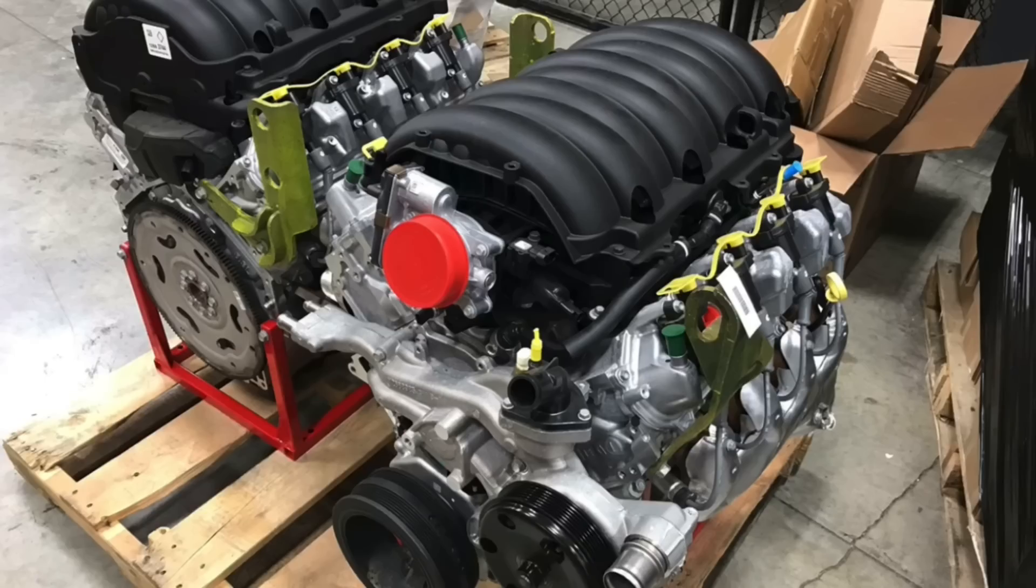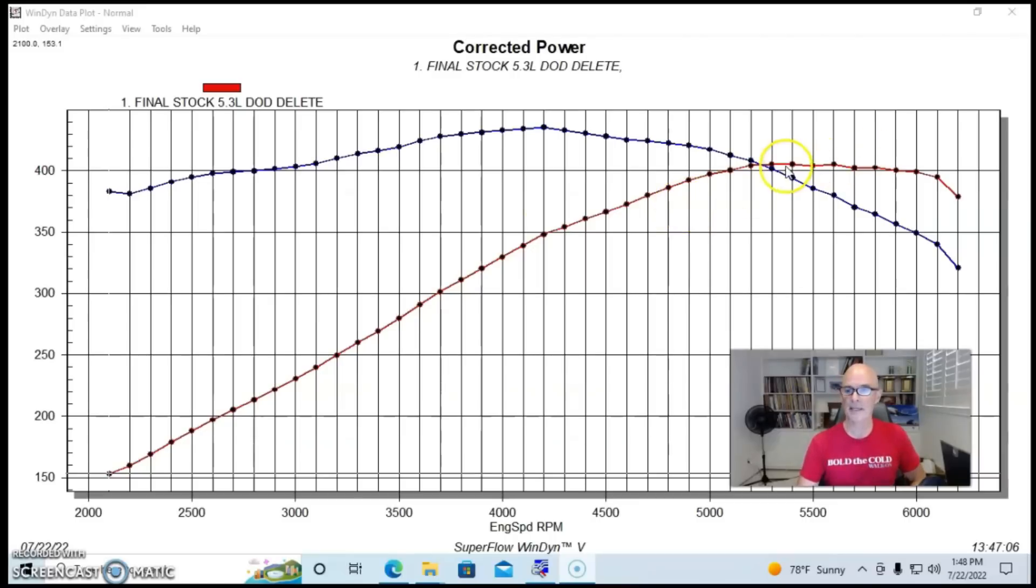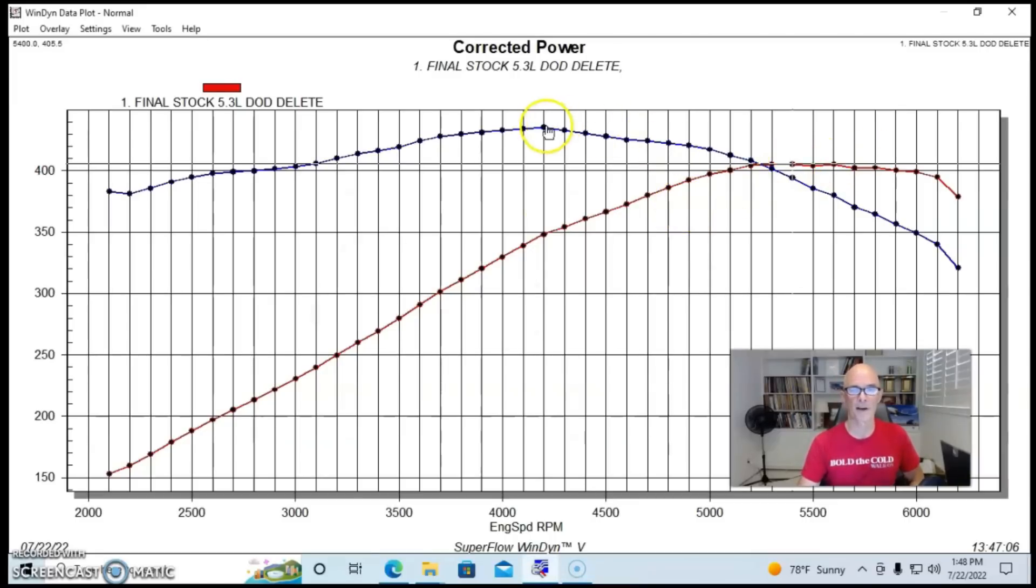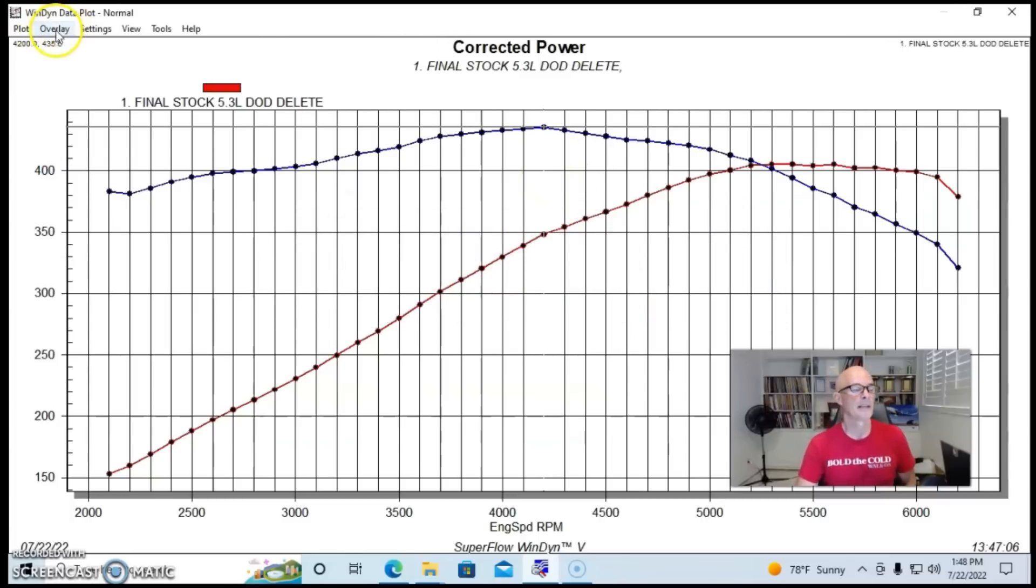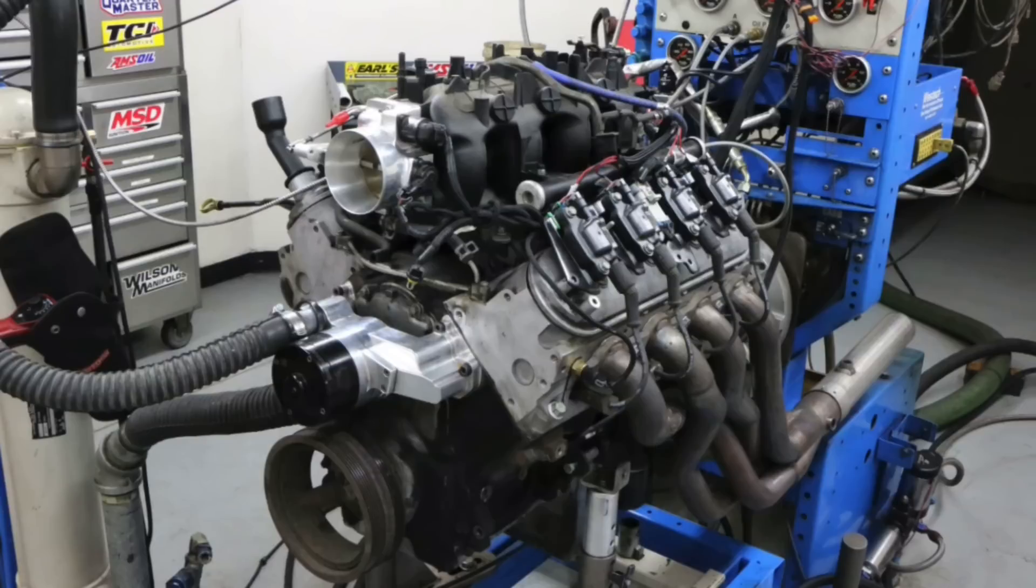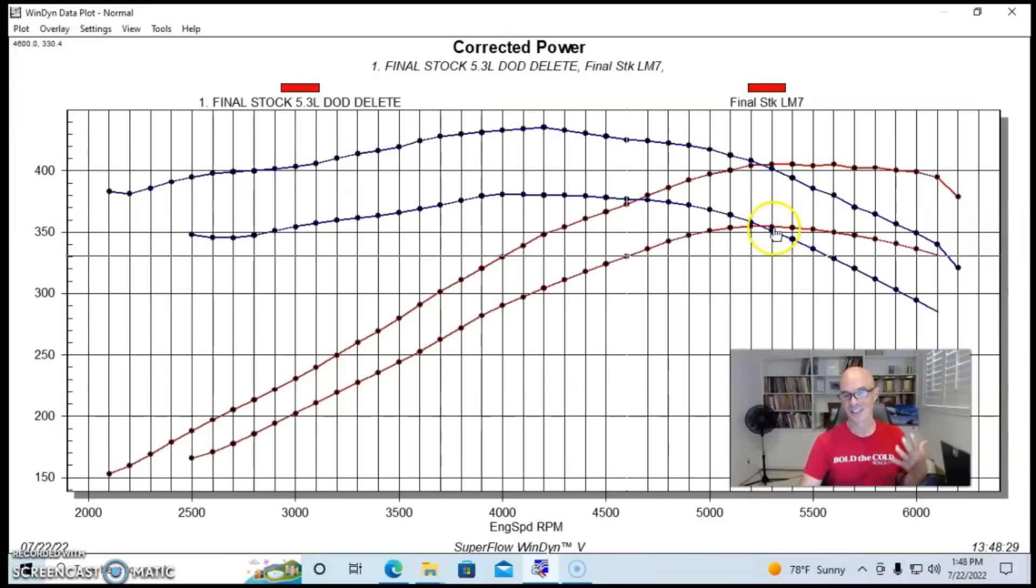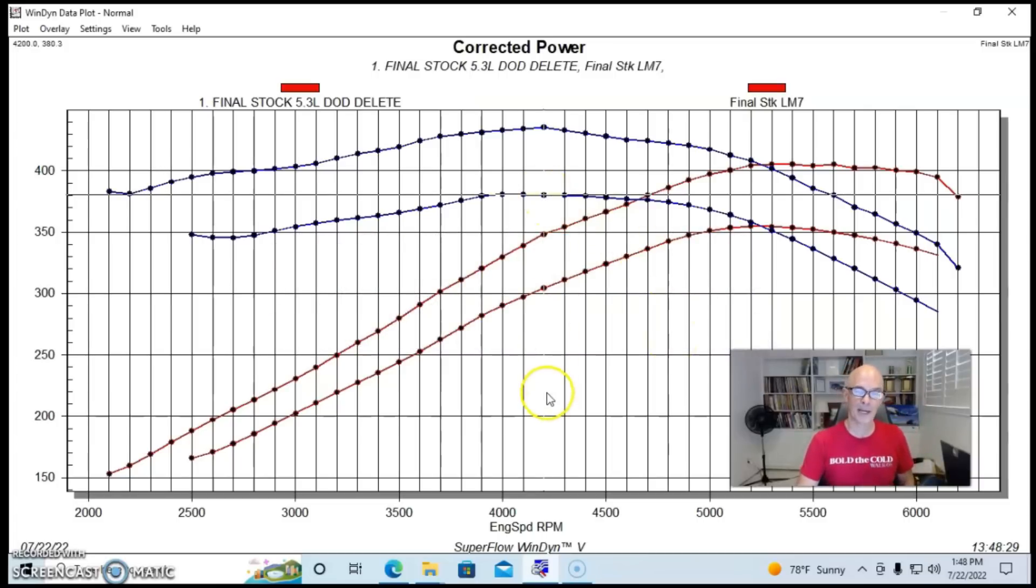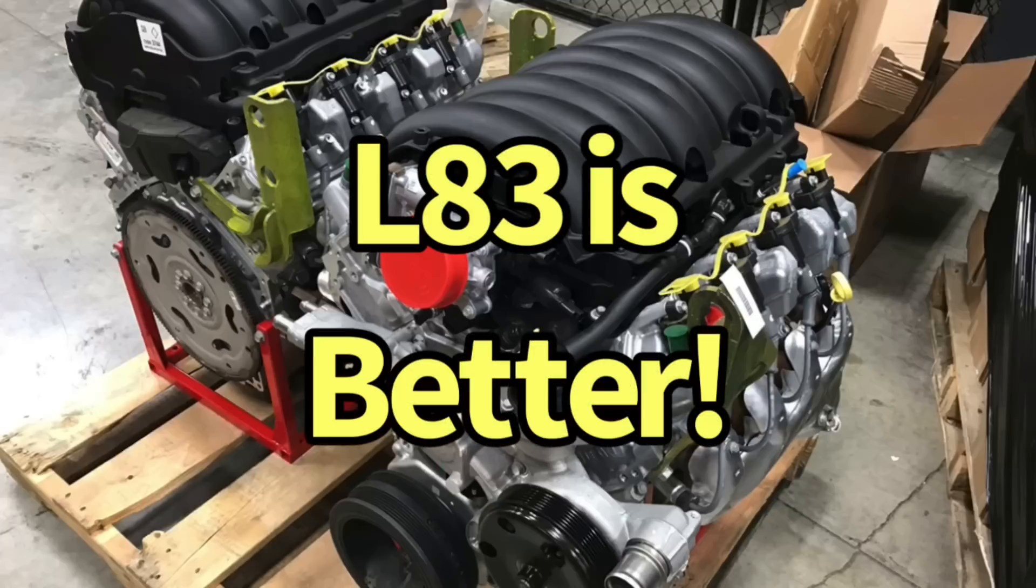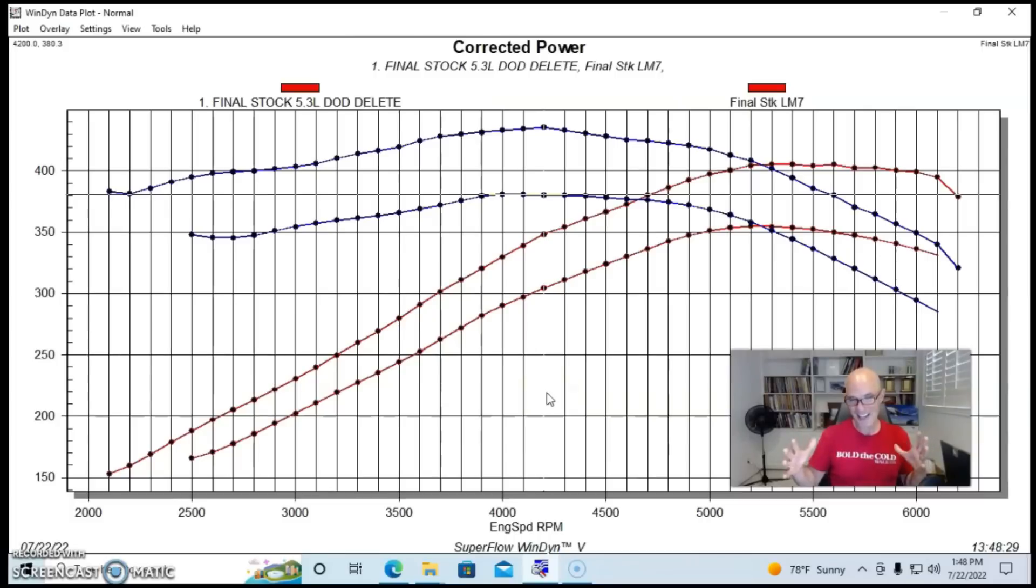So this was a basically stock 5.3 liter L83, and it made a little over 400 horsepower, 405 horsepower, and 435 foot pounds. And to put this into perspective on how well these work, here is a stock 5.3 liter LM7 that I normally get from the wrecking yard. A little over 350 horsepower, 355, and 381 or 382 foot pounds of torque. So you can see, compared to the 5.3 liter, the modern 5.3 or the L83, the older one is just not cutting the mustard. The better one is basically better everywhere. It's better down low. It's better up top. It's basically better in every way. It makes a lot more power.